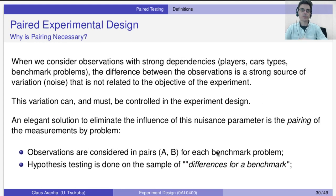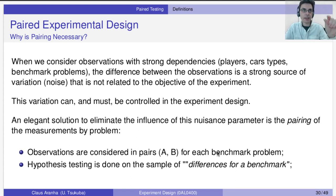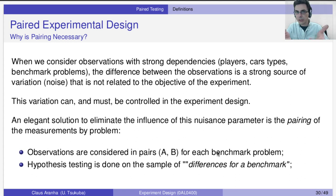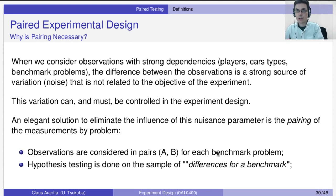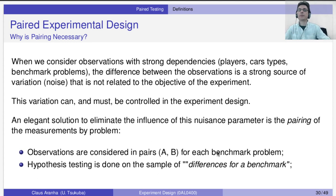Why is pairing necessary? When we consider observations with strong dependencies — for example, players, car types, or benchmark problems — the difference between the observations is a strong source of variation. There is random variation, variation due to the different methods, and also variation due to the different players, car types, or benchmark problems. This variation is not related to the question we're asking — what is the difference between method A and method B — so we need to control it. The solution is to pair the measurements.